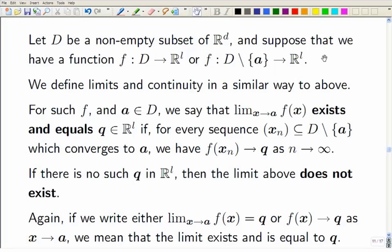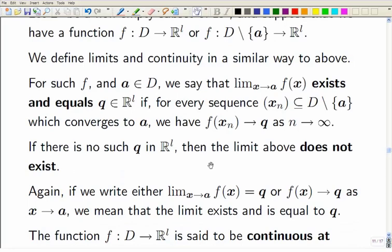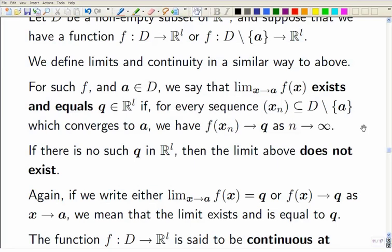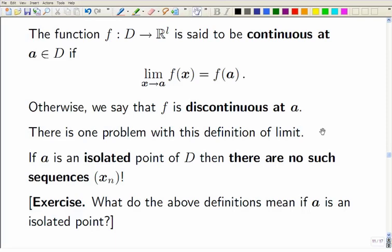So we attempt to make the same definitions as before for a function that's only defined on some domain D, some non-empty subset D of R to the d, taking values in R to the l. We make exactly the same definition. We look at all possible sequences in D take away A which converge to A, and we ask, is it always true that f of x_n tends to q as n tends to infinity? But you hit a problem. This definition only makes sense if it's a non-isolated point.